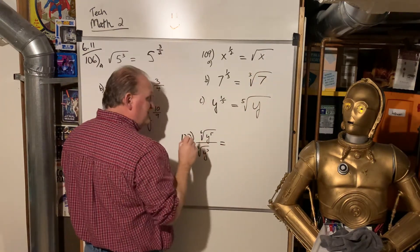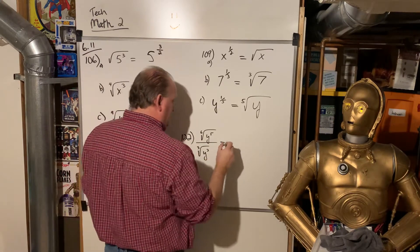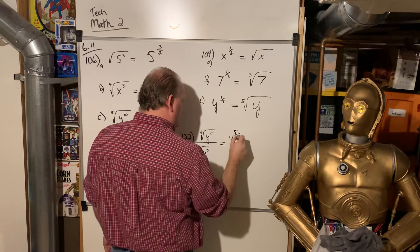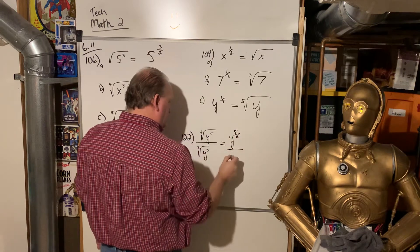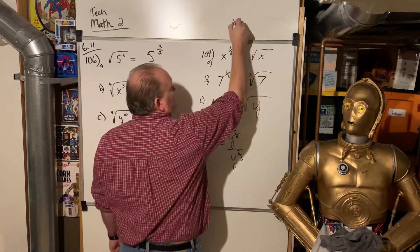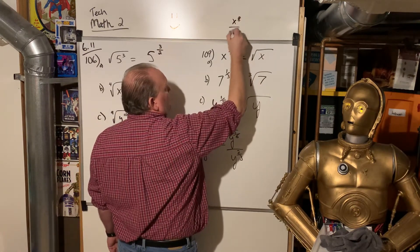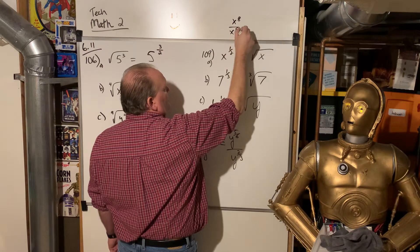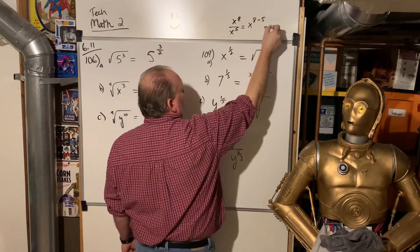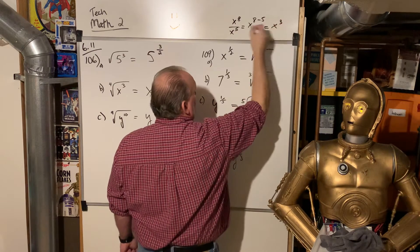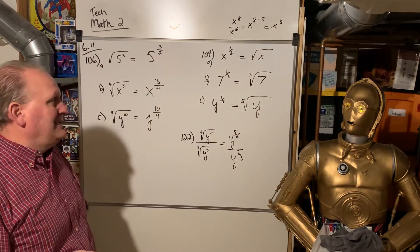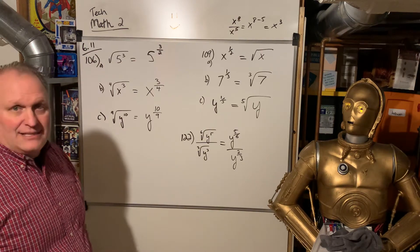So how about this one? This one is tricky. This one is going to take a little explaining. So that is to the 5 sixths, and this is to the 2 thirds. And then remember, like when we add x to the 8th over x to the 5th, you just say x to the 8 minus 5, which would be x to the 3rd.